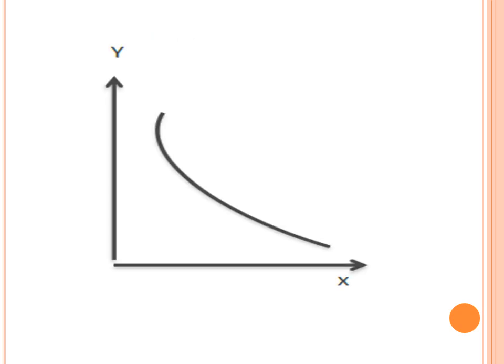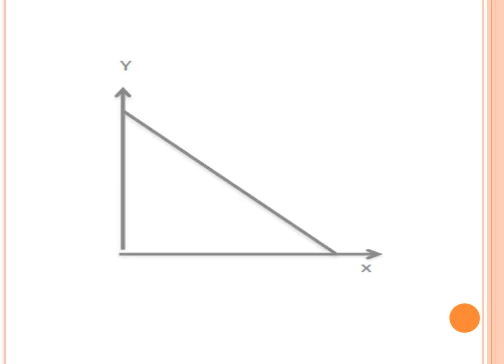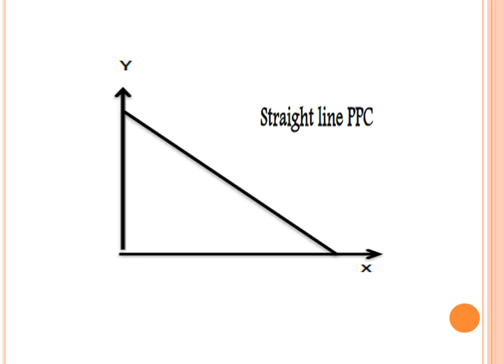The convex production possibility curve indicates that the opportunity cost of producing Y in terms of X is decreasing along the curve. So, the convex production possibility curve indicates a decreasing opportunity cost of producing any good in terms of the other good. The last shape is the straight line production possibility curve. In that case, the opportunity cost of producing any good in terms of the other good is constant along the line.